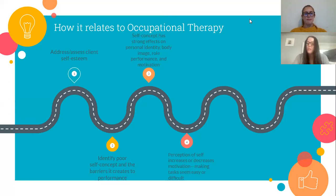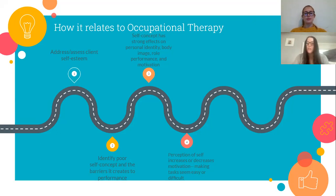An OT may use this assessment to establish a client's self-esteem in order to address negative perceptions of oneself and the reasons why perception of self is low. With this, the OT can attempt to turn these negative perceptions into positives, as well as using these perceptions as motivational factors to overcome barriers of poor self-concept and poor occupational performance. This assessment relates to functional performance because self-concept relates to identity, body image, and role performance. Your attitude towards self-concept, as well as your motivation, significantly affects your achievements, which are dependent on what you think you are able to accomplish.